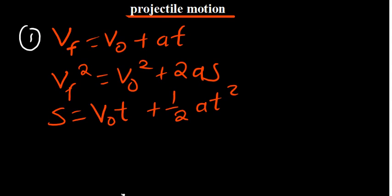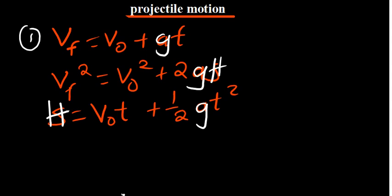So these equations we are going to convert to projectile motion. Whenever we are dealing with projectile motion, where there is distance we are going to put height, and where there is acceleration we are going to put gravity — so A will become G, and our distance will become height. So we've changed the form of the equations.